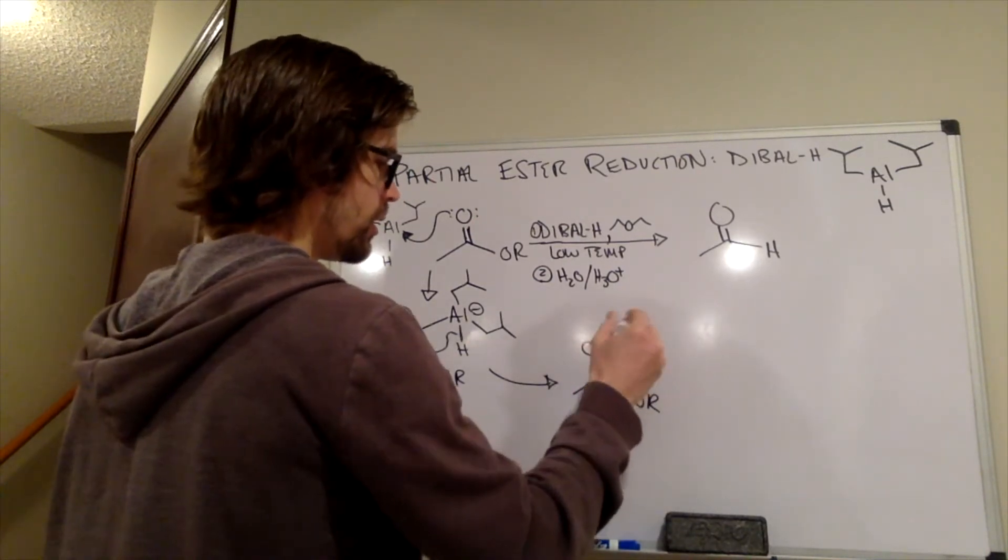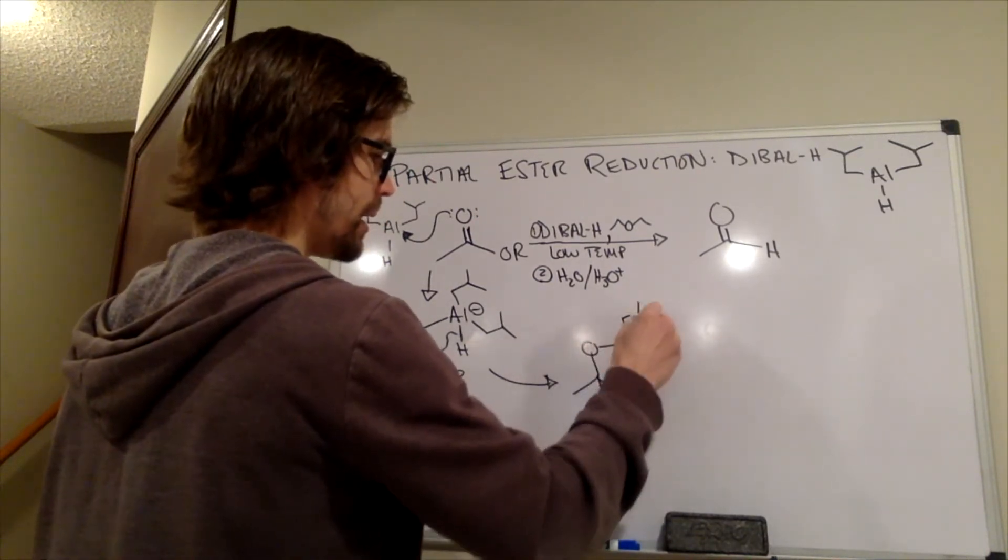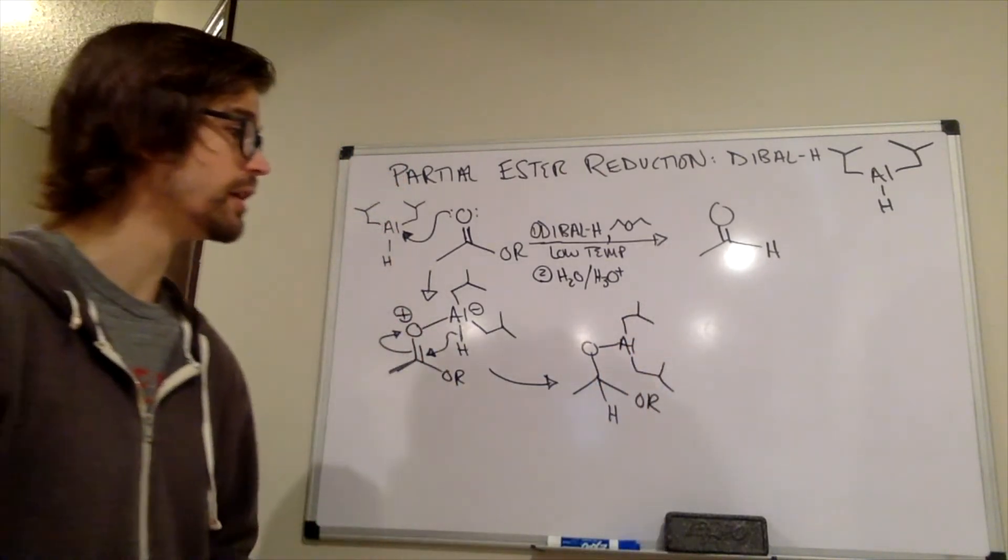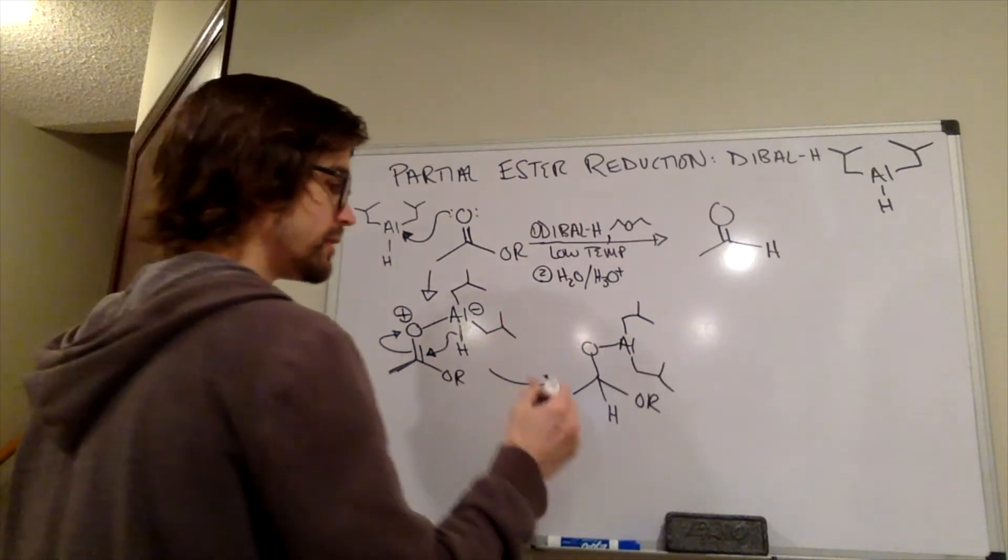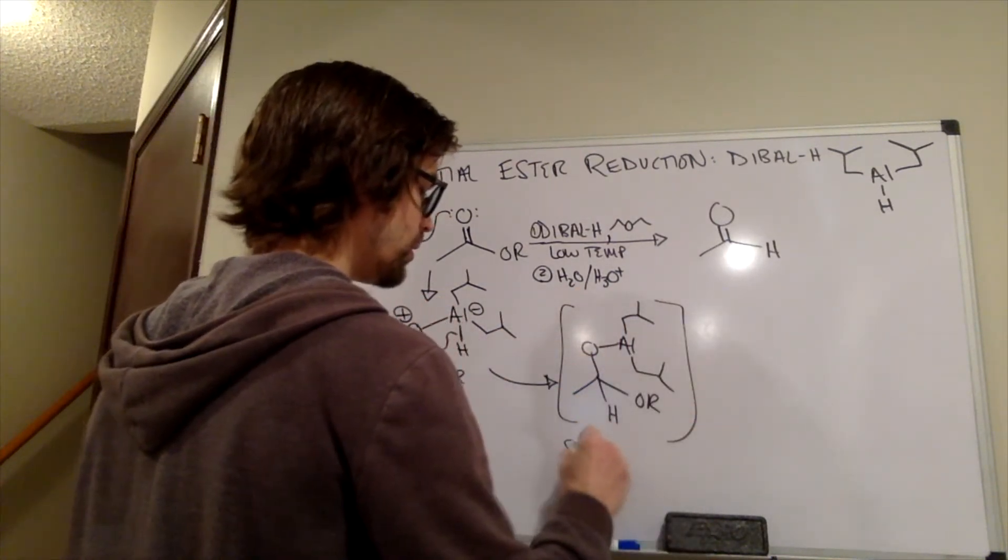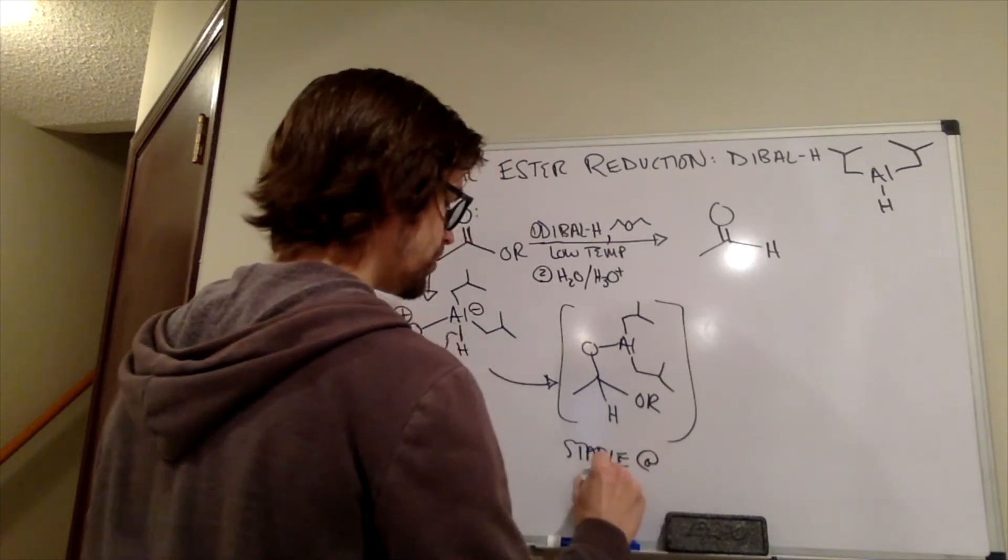At that point, we have the hydride that just added there. We have our O-aluminum bond. The aluminum has those two big isobutyl groups on there. And essentially, this complex, this whole thing is stable at low temperature.